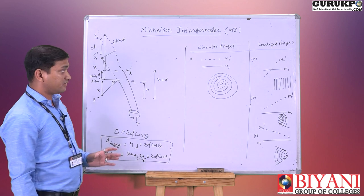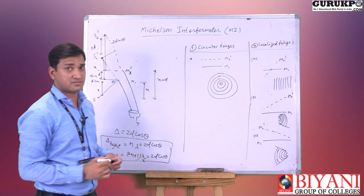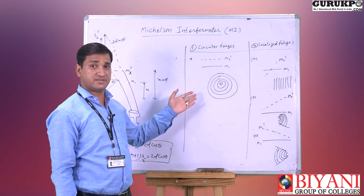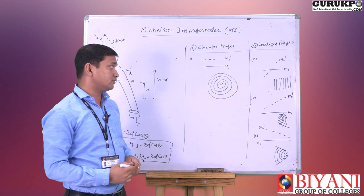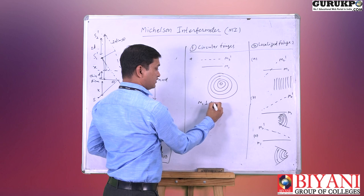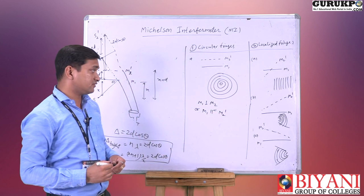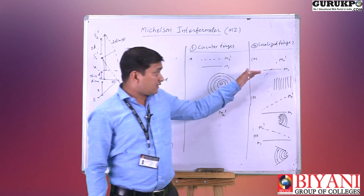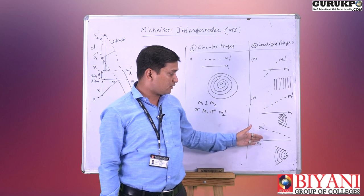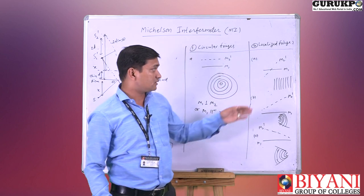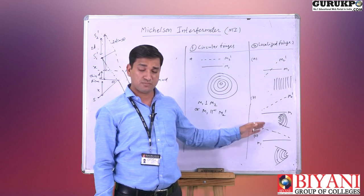Based on the path difference, there are two types of fringes observed. First are circular fringes, and second are localized fringes. Circular fringes are also known as non-localized fringes. The condition for circular fringes is that M1 and M2 are exactly perpendicular — that is, M1 is parallel to M2 dash — then we observe circular type fringes. If mirror M1 is fixed and the image M2 dash is crossing mirror M1, then localized fringes are observed. If they exactly cross each other, straight-line fringes are observed; if they are supposed to cross, hyperbolic fringes are observed.